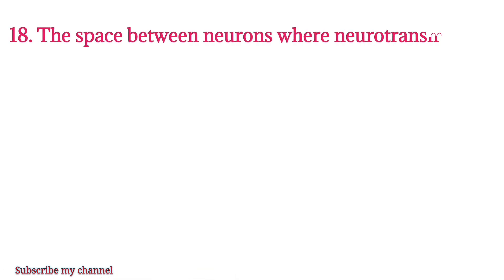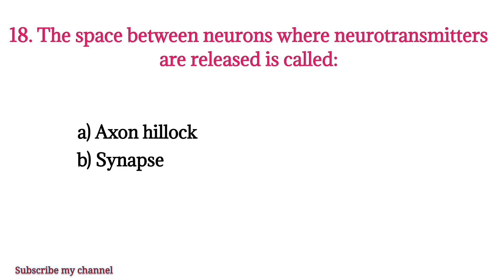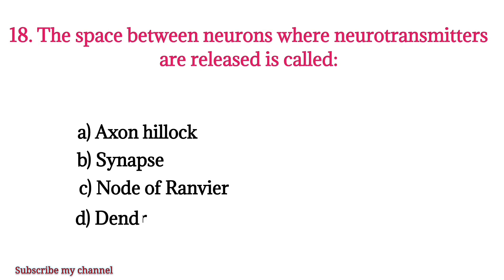MCQ number eighteen: The space between neurons where neurotransmitters are released is called — option A: axon hillock, option B: synapse, option C: node of Ranvier, option D: dendrite. The right option is option B.